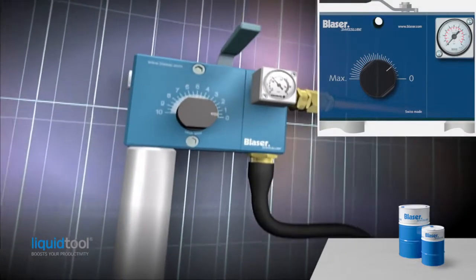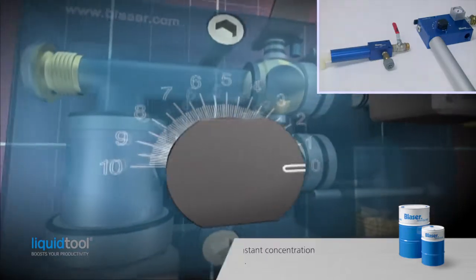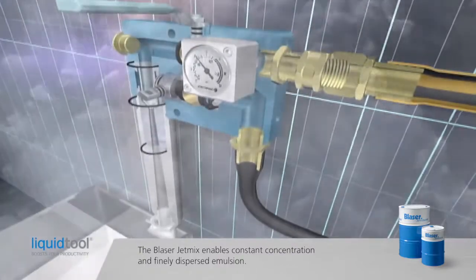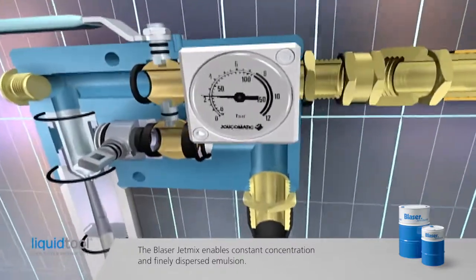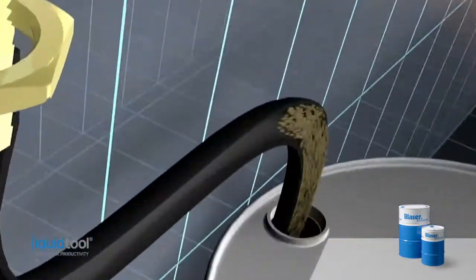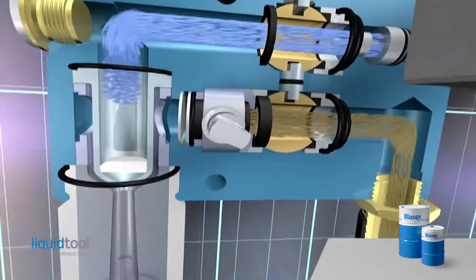The Blazer Jet Mix is ideal for mixing emulsions. It not only maintains a constant concentration but also ensures a finely dispersed emulsion. Concentrate is sucked in and mixed by the water jet according to the venturi principle.